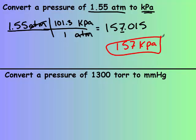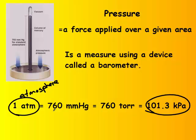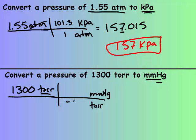We've got one more. We start with 1300 torr. The unit given goes on the bottom and what I'm looking for goes on top. 760 goes with millimeters of mercury, and it also goes with torr. Therefore, those cancel and we're left with the result.